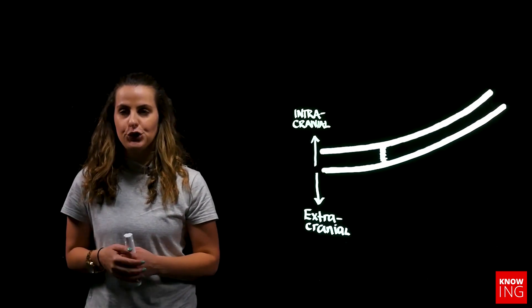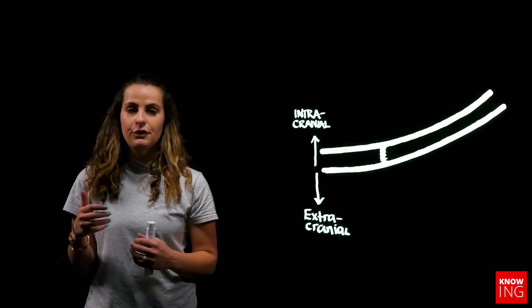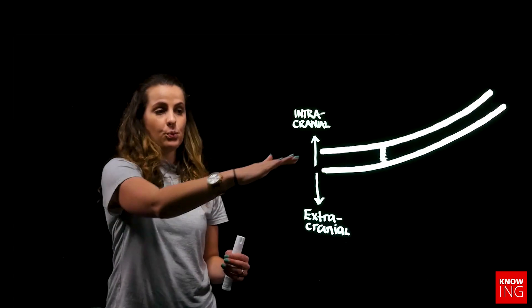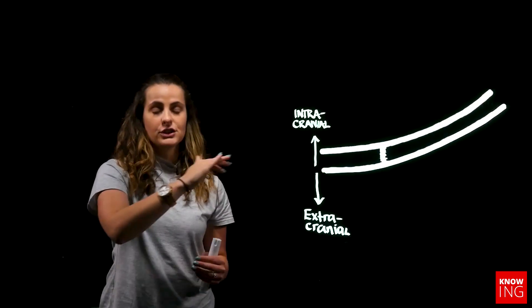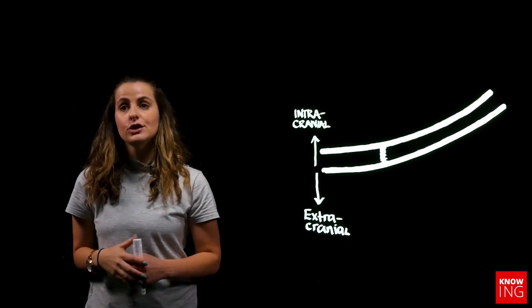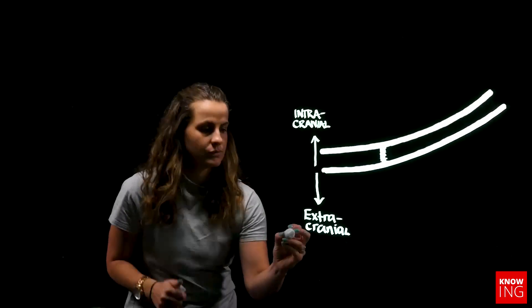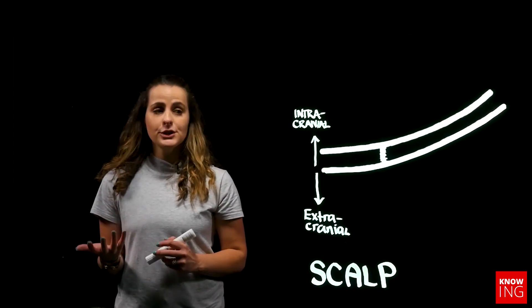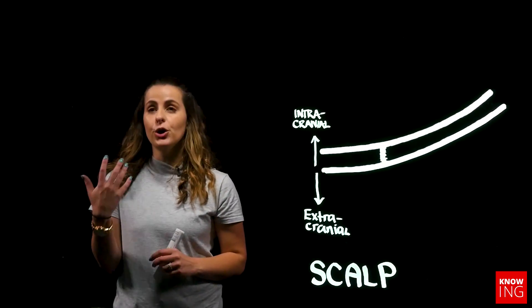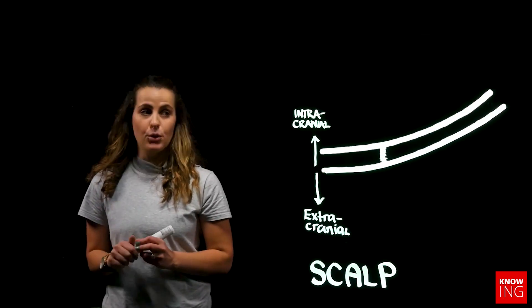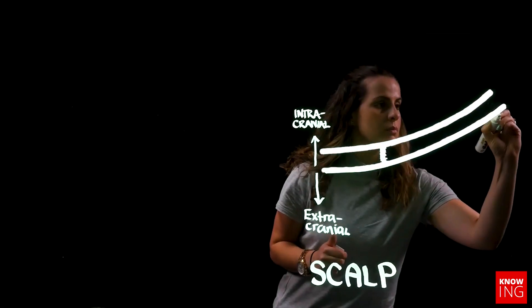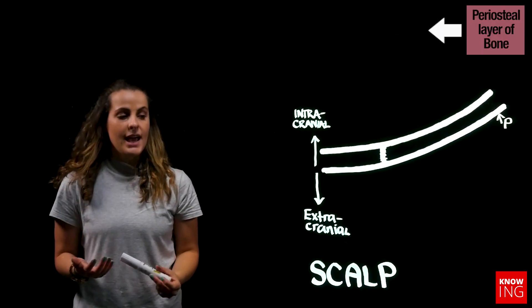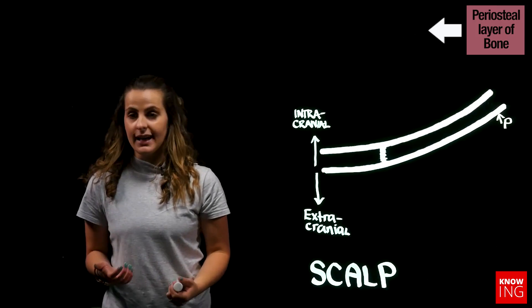A useful mnemonic to remember the order of scalp layers from superficial to deep is SCALP, where skin is the most superficial and the deepest point of interaction is the periosteum of the bone. Connecting directly to the periosteum is a layer of loose connective tissue.